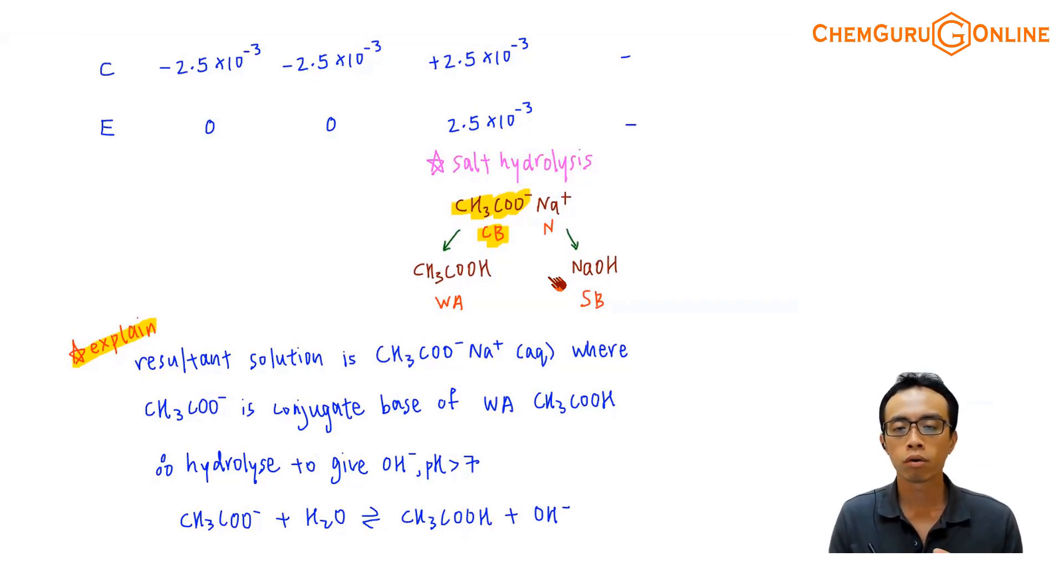So if the question asks us for explanation, sometimes they'll tell you that the equivalence point for this acid-base reaction between weak acid and strong base, the equivalence point is alkaline, or maybe pH 9. Can you explain why this is the case? So the explanation will be here.